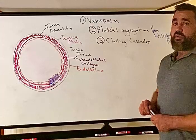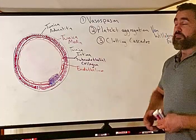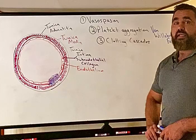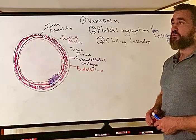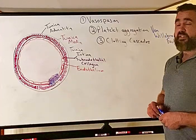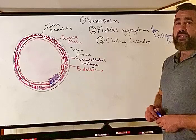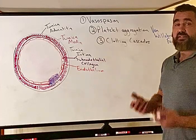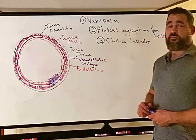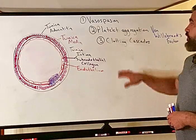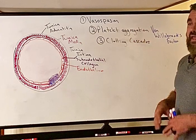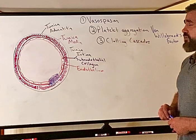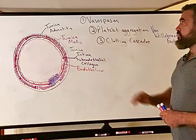Platelet inhibitors — drugs like aspirin and Plavix — bind to receptors on the surface of platelets and inhibit their action, so the platelet plug takes longer to form. These are often prescribed after stent placement. Anticoagulants like warfarin, heparin, Xarelto, and direct thrombin inhibitors work on the clotting cascade itself, affecting the clotting factors.